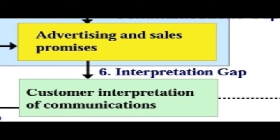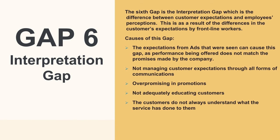Gap number six is the interpretation gap — the difference between the customer's expectation and the employee's perception. This arises from differences in how frontline workers interpret customer expectations. Causes include expectations set by advertising not matching actual performance, not managing customer expectations through all forms of communication, over-promising in promotion, not adequately educating customers, and customers not always understanding what the service has done for or to them.